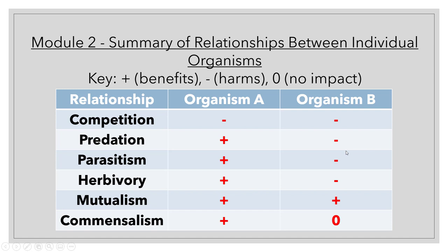Let's check your answers. Competition: no one benefits — not after the competition, anyway. Predation: the predator benefits — note that's the predator. Parasitism: the parasite benefits. Herbivory: the animal eating benefits. Mutualism: both benefit. Commensalism: one benefits and the other is essentially unaware.